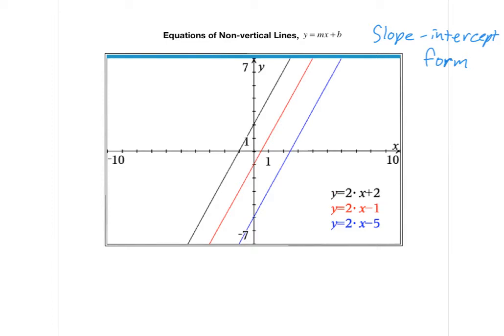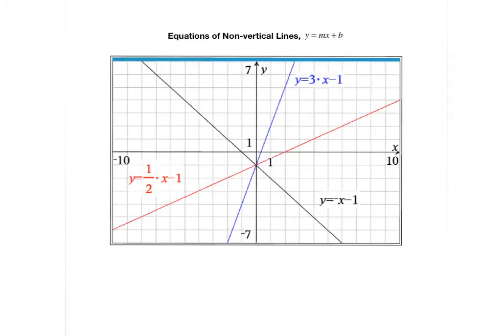Let's look at another set of three lines to see if we can find some more commonalities. The blue line's equation is y equals 3x minus 1. The red line's equation is y equals 1 half x minus 1. And the black line's equation is y equals negative x minus 1.